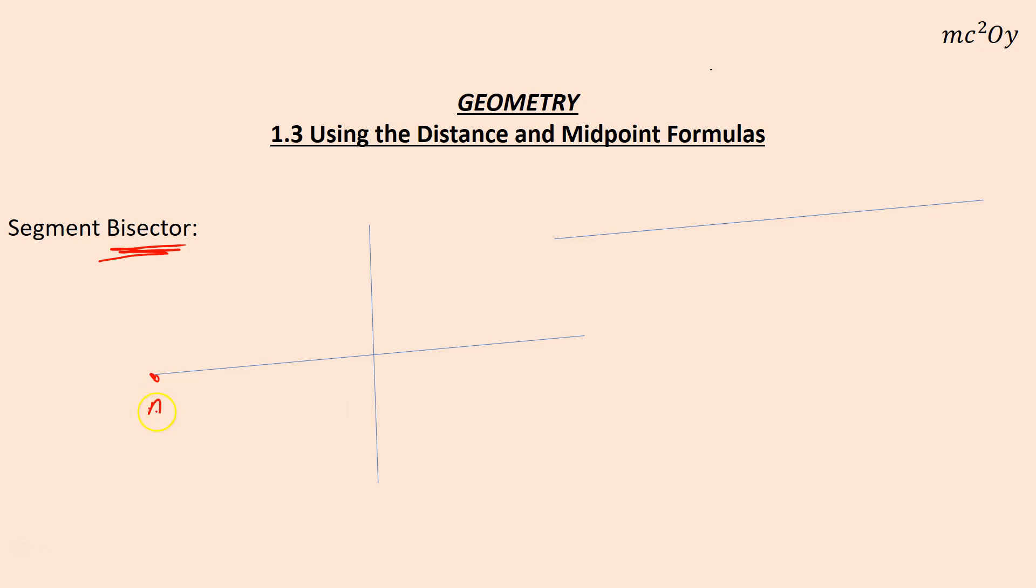So if I have, say, segment AB, and I bisect it with, say, line L. Put some arrows on the end there. So this is line L. That means it cuts that in half. We're going to say it cuts it in half at point P there. That is the midpoint of that segment. So this is line L is a segment bisector.